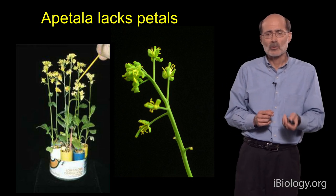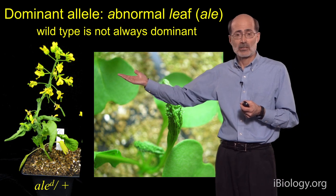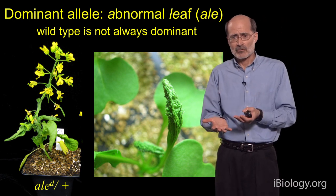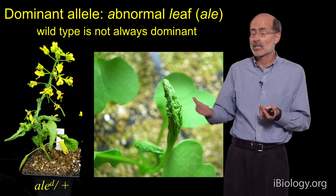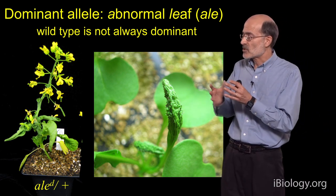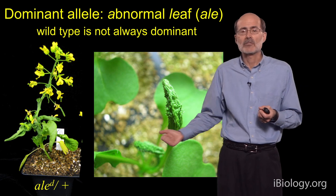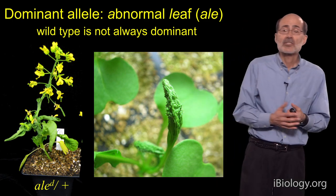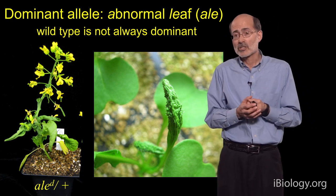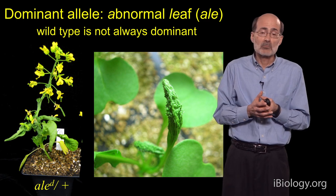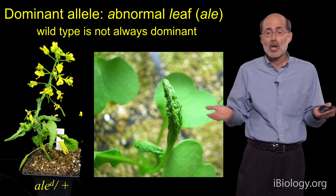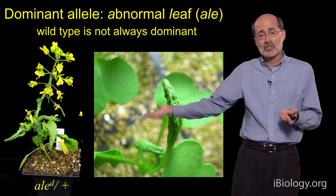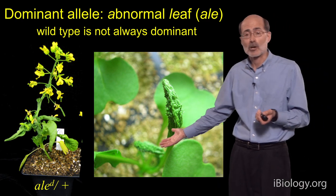One last mutant I want to mention is one called abnormal leaf, and I mention this mutant because it's dominant. This illustrates an important principle in genetics: that mutants aren't necessarily always recessive — that's a common misconception. Here's a particular mutant that's dominant, and it causes these leaves to form a very shriveled, abnormal pattern. Shown here is a plant that has one copy of the mutant gene and one copy of the wild type version. There are many important conditions in humans where dominant genes can play a very negative role, such as Huntington's disease, where a dominant mutant version of the gene can lead to disease.